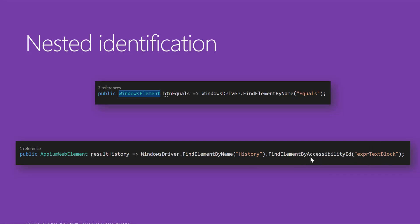When you nest elements this way, the return type of 'FindElement(By.AccessibilityId(...))' is going to be AppiumWebElement instead of WindowsElement. This is because the WindowsElement class is actually built on top of AppiumWebElement, and AppiumWebElement itself implements IWebElement and RemoteWebElement. These all fall under the same inheritance hierarchy, which is why the return type becomes AppiumWebElement.